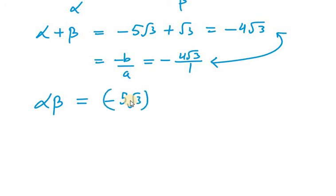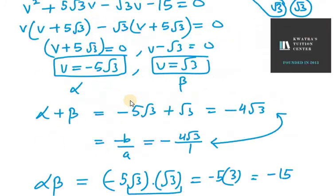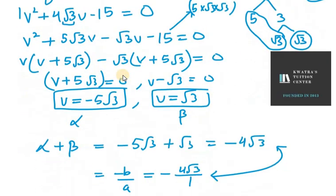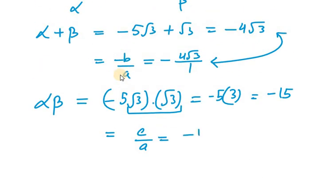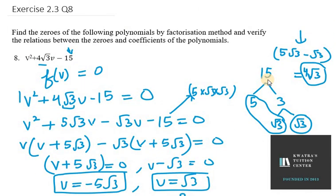Second, the product of zeros: α·β = (-5√3)(√3) = -5 × 3 = -15. To verify, the product of zeros equals c/a. Here c is -15 and a is 1, so c/a = -15/1 = -15. Left hand side equals right hand side, hence verified. That's how we solve question number 8.